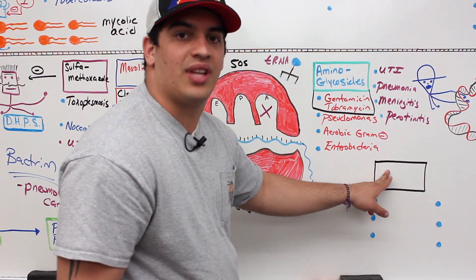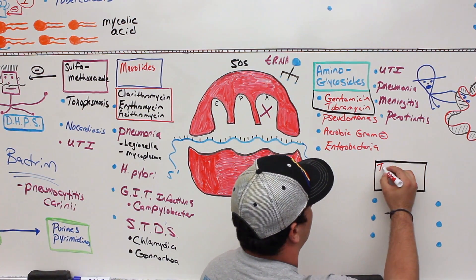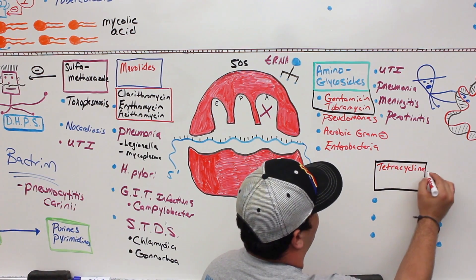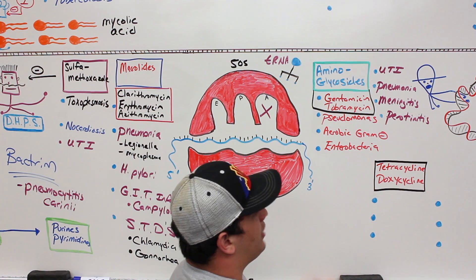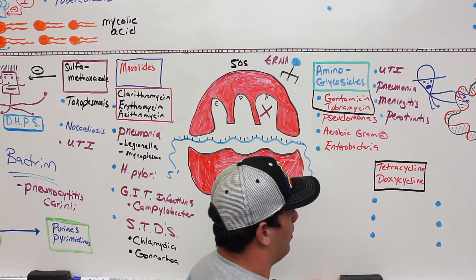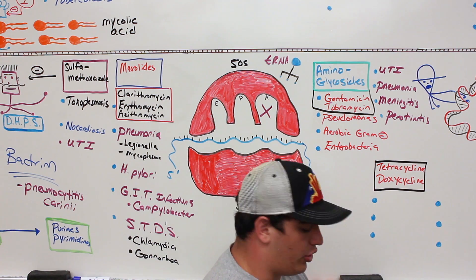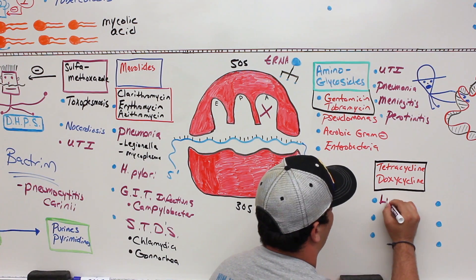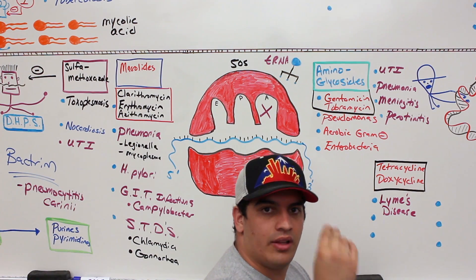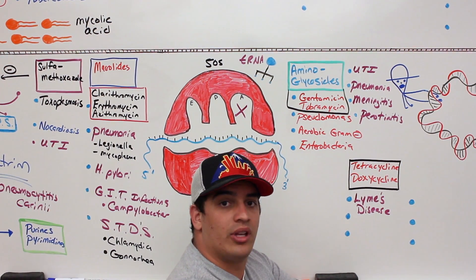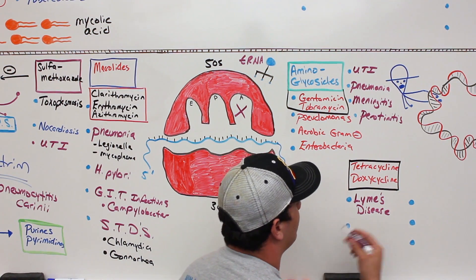The last class targeting the protein synthesis pathway is the tetracyclines. A key example is doxycycline. Tetracycline and doxycycline can treat Lyme's disease, which is caused by Borrelia burgdorferi transmitted through tick bites and causes joint pain and nervous system problems. They are also good at treating chlamydia, which is a sexually transmitted disease that can also cause respiratory tract infections.